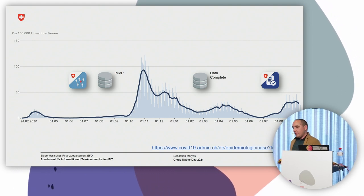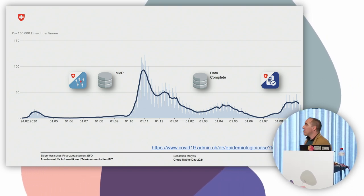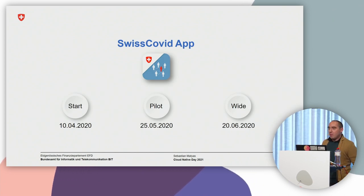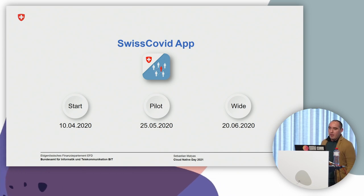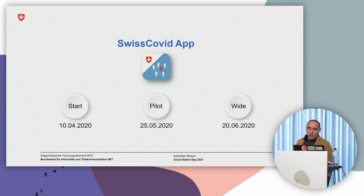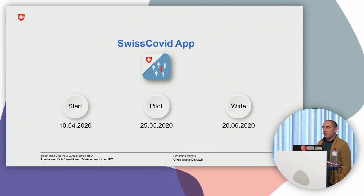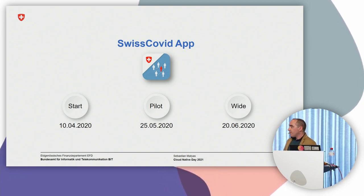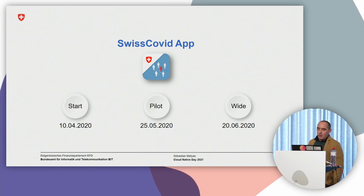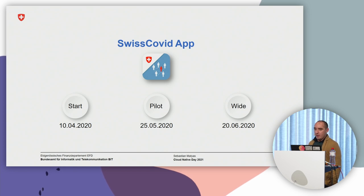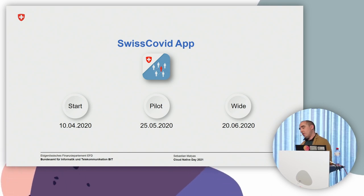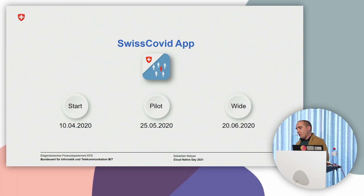The Swiss COVID app started in April last year, with a pilot phase beginning at end of May — roughly two months of development. The wide public release was end of June, with an additional month due to legislation that had to pass through parliament, even though the app and all systems were already ready during the pilot phase.